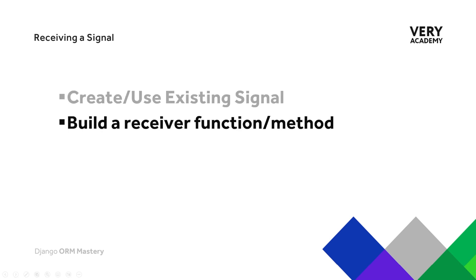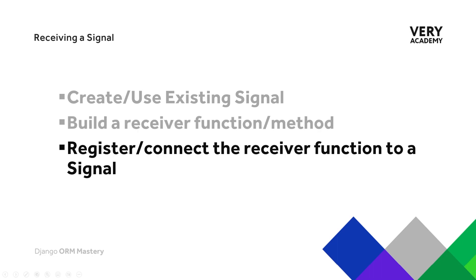Knowing we'll utilize the post_save signal, next we need to build a receiver function. A receiver function is the function that's going to be initiated when the signal is sent. This receiver function needs to be registered or connected to the actual signal. So we need to make sure the signal exists, build the function, and then register that function to the signal — so that whenever the specified signal is initiated, the receiver function will be run.